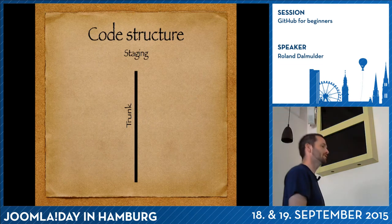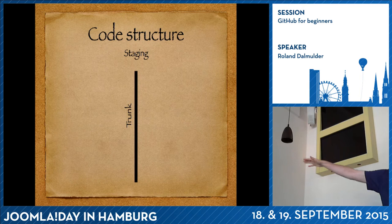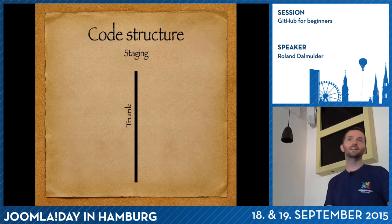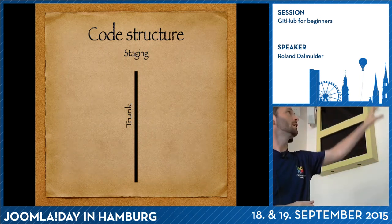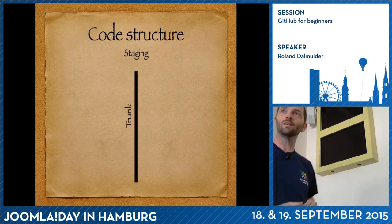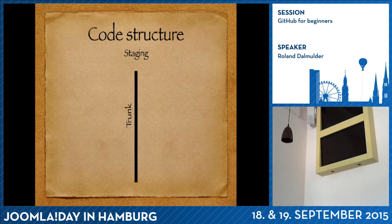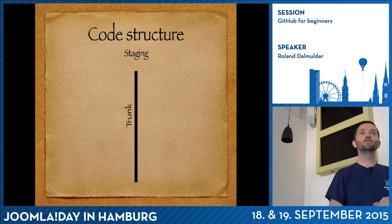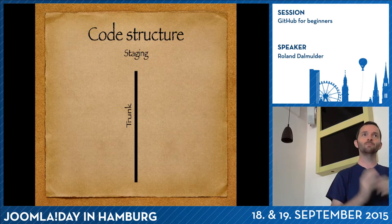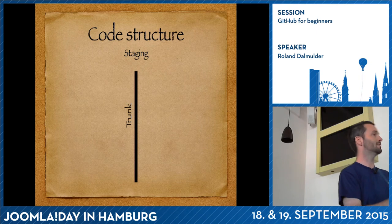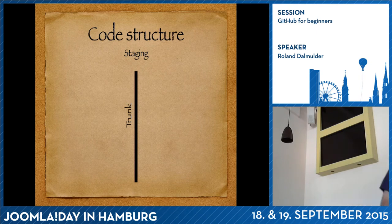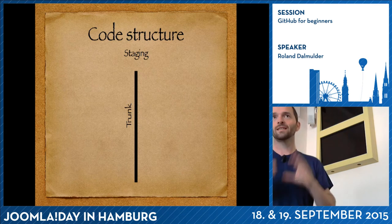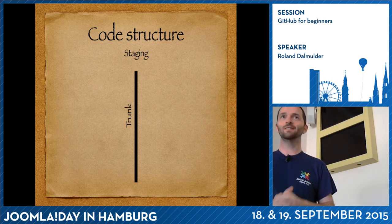So what are branches? The word branch comes from a tree — the things growing out of a tree we call branches, and that's exactly how Joomla code works as well. We have the trunk: the big stable part of the tree, it doesn't really move. Same with Joomla code — we want it to be as stable as possible. This is the main branch, and in Joomla we call it staging.